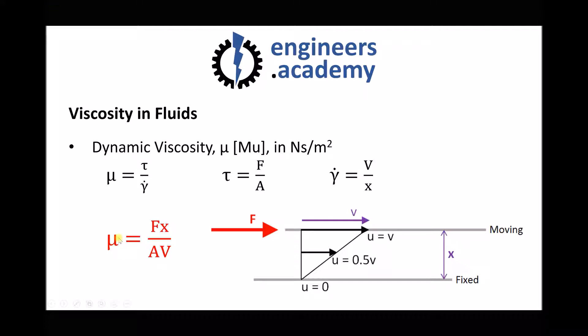We then went on to discuss that if the dynamic viscosity increases, then the force that needs to be applied in order to maintain the same velocity also increases. Or vice versa, if the dynamic viscosity increases and the force remains the same, then the velocity of that top plate must decrease. So we saw these relationships between viscosity, the shear stress on the fluid, and the shear rate of the fluid.